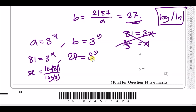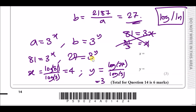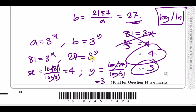Putting log 81 over log 3 into a calculator gives exactly 4. Likewise, y equals log 27 over log 3, which gives 3. By the way, this is an A-level technique — you won't be penalized for using it. So x equals 4 and y equals 3. Problem solved.